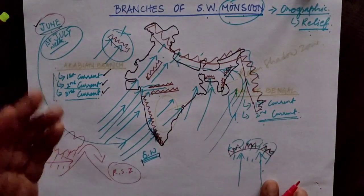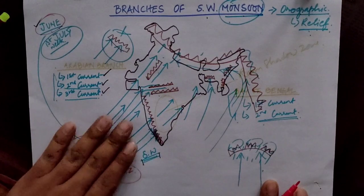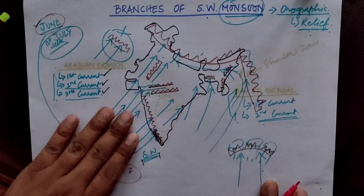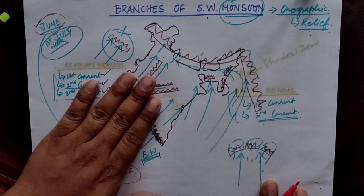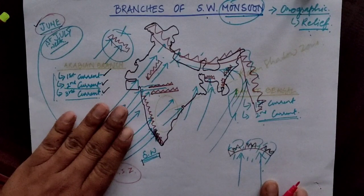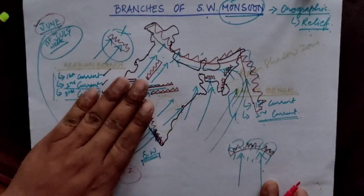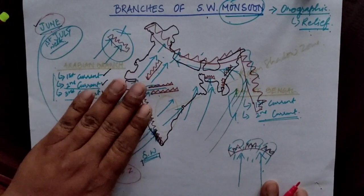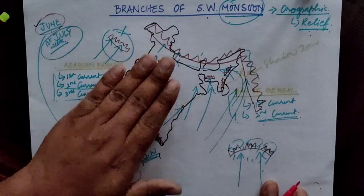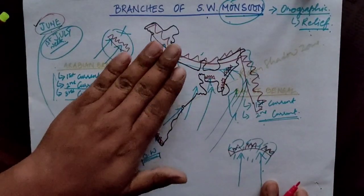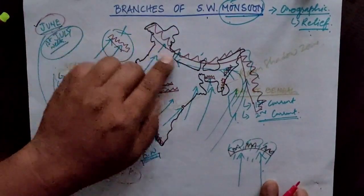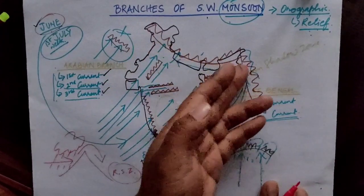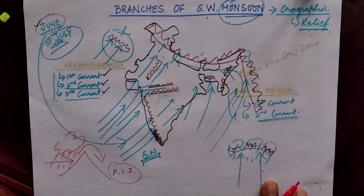The third current moves through the same trough as well as the coastal areas of Gujarat. It passes through Gujarat and Rajasthan, then moves to the foothills of the Siwalik mountain range, showering rainfall in the Himalayas and their foothills.